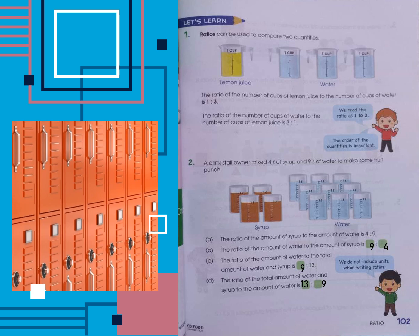In the second example, a drink stall owner uses four liters of syrup and nine liters of water to make some fruit punch. In part A, the ratio of the amount of syrup to the amount of water is four to nine, because there are four cups of syrup and nine cups of water. In part B, the ratio of the amount of water to the amount of syrup is nine to four, because we are finding the ratio in terms of water — there are nine cups of water to four cups of syrup.